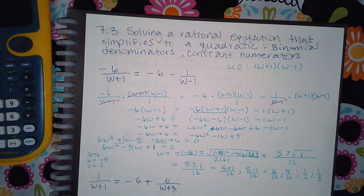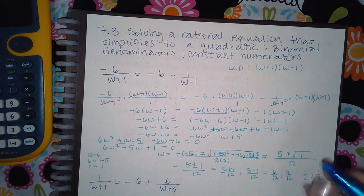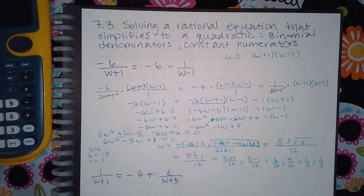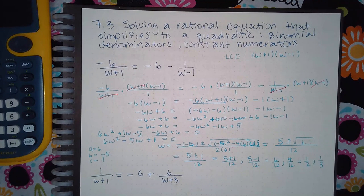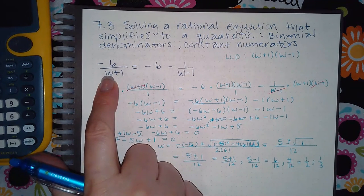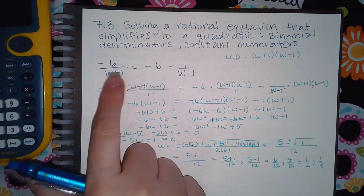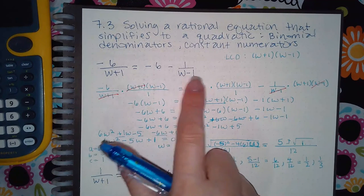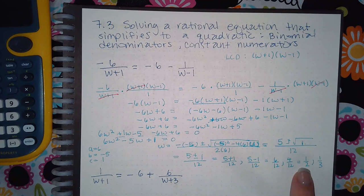Now I do have to verify that these are in fact solutions. And all I have to do is make sure that they are not going to cause my denominators to equal zero. So when I plug in 1 half here and I add 1, I don't get zero. When I plug in 1 half here and I minus 1, I don't get zero. So 1 half is a good answer. It will be a solution.